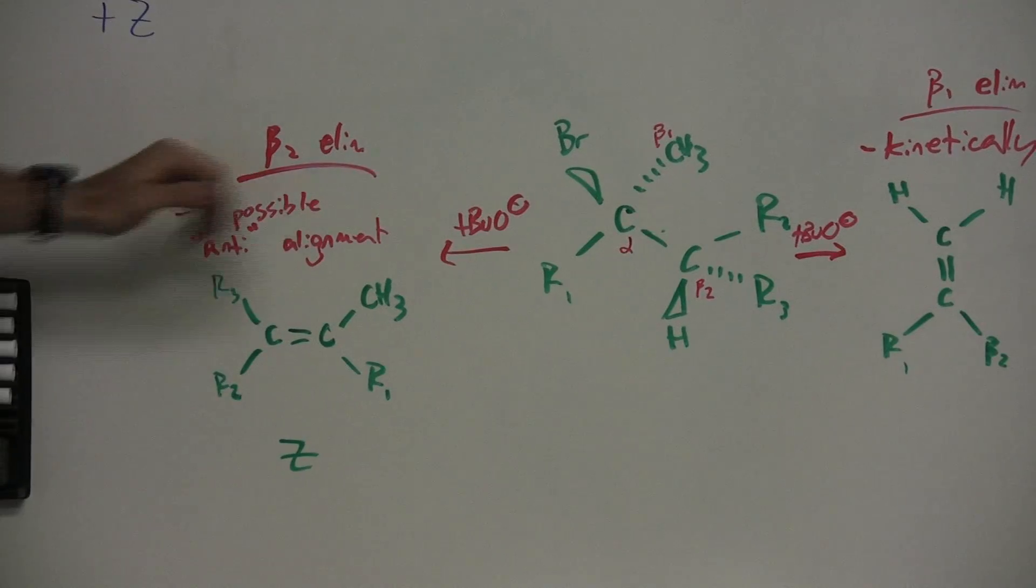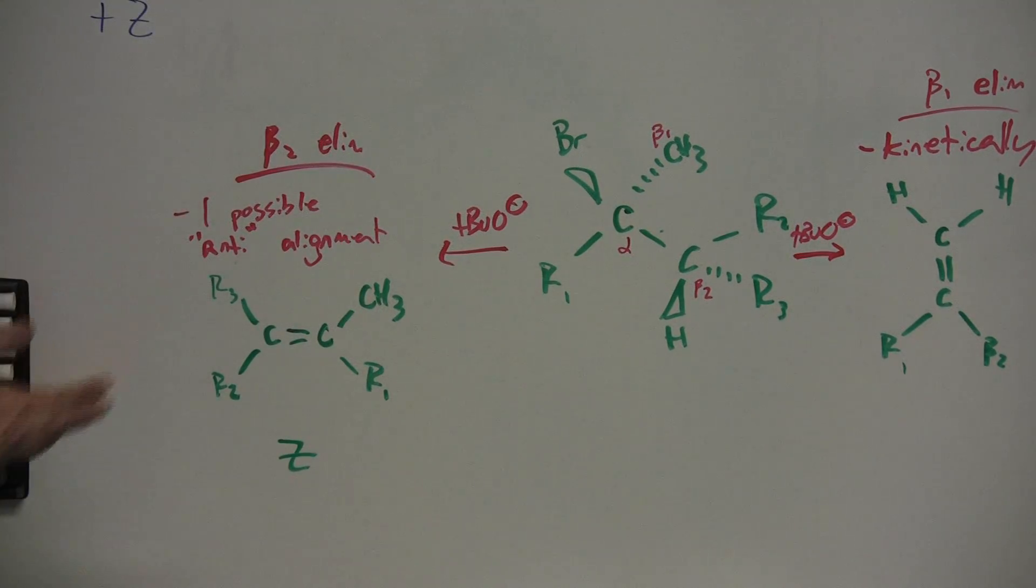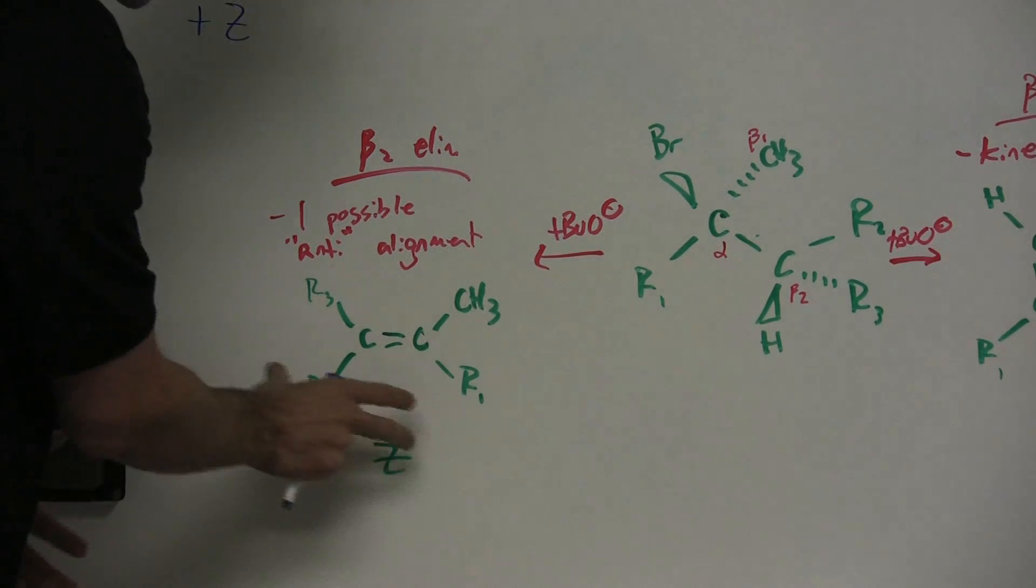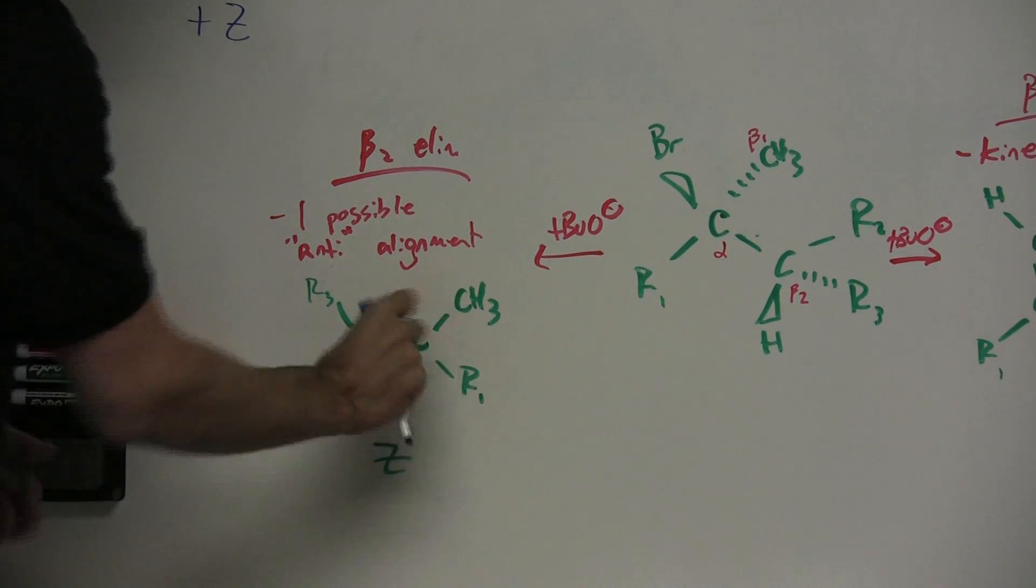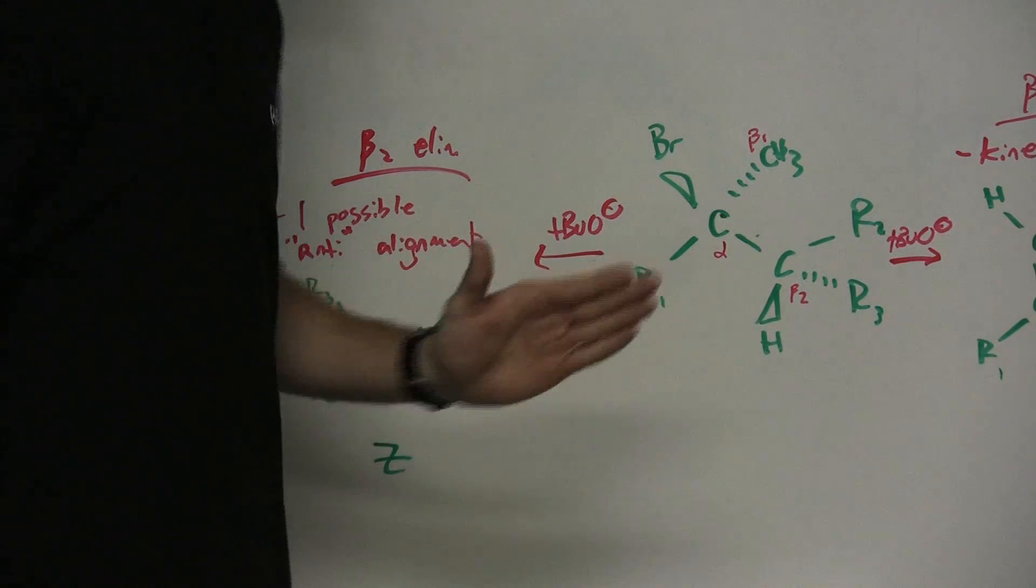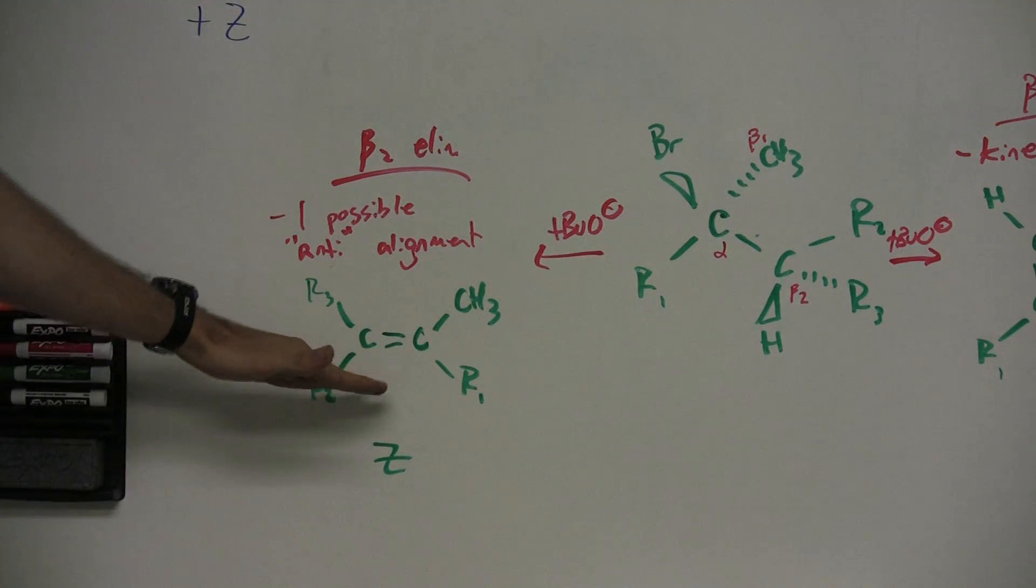Now, if you look at the beta 2 elimination, what's going on with this carbon? Well, there's only one possible anti-alignment, and that's this one that forms this product here. You'll notice that on the same side, it's the Z, on the same side of that double bond here. So there's only one possible alignment here because there's only one H present. So if you have to rotate it, then you have to do that to get to that alignment.